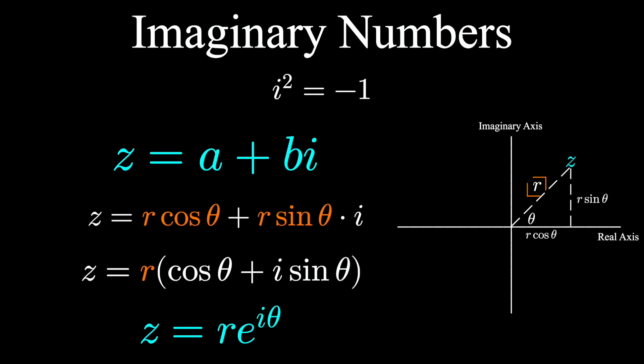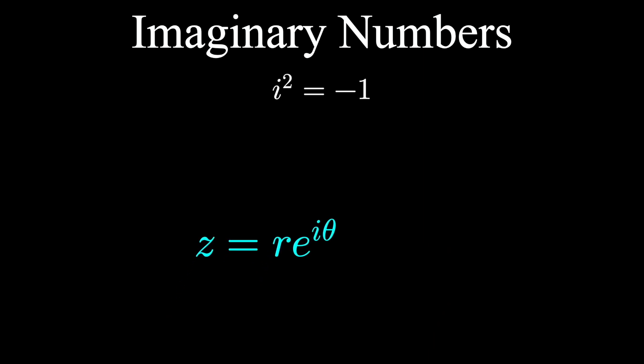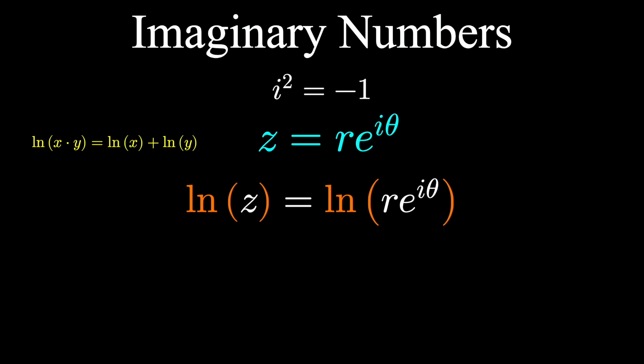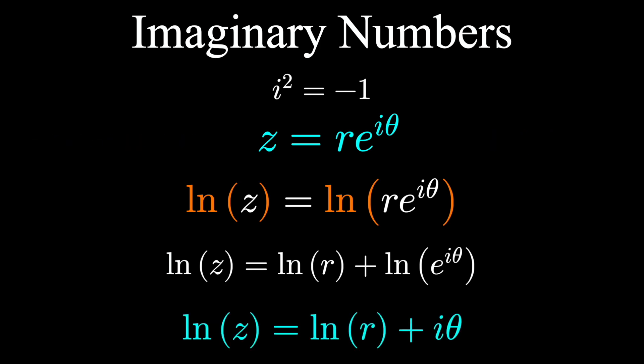This is now very convenient to take the natural logarithm of. We can apply properties of logarithms, splitting up this product into a sum of logarithms. We're seeing natural log and e canceling out—those are inverse functions, they undo each other. Now we know what the natural logarithm of a complex number should be: it should be the natural logarithm of r, the distance from the origin, plus iθ, θ being that angle measured counterclockwise from the x-axis.